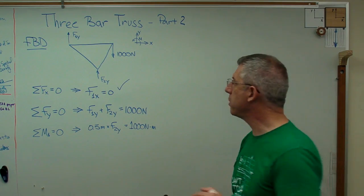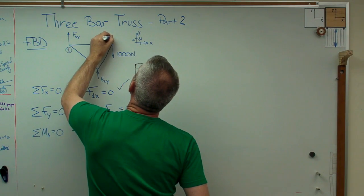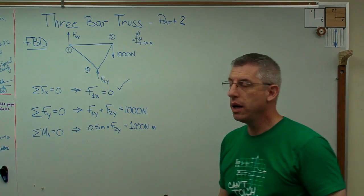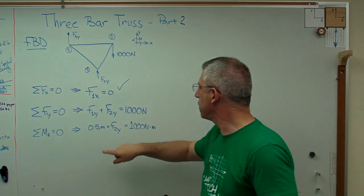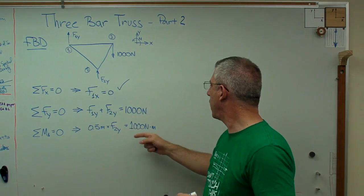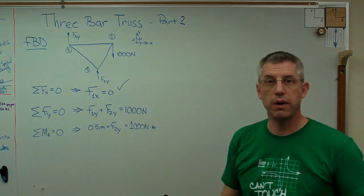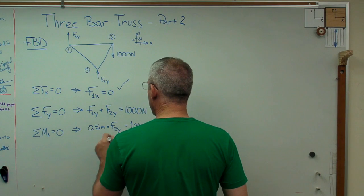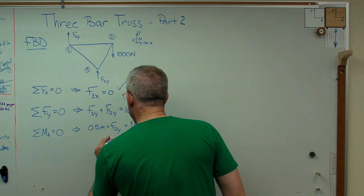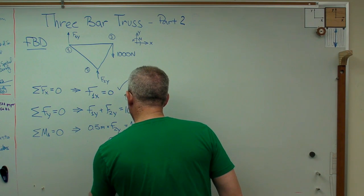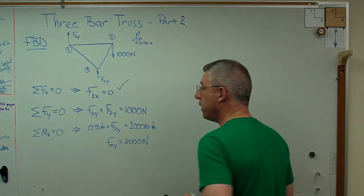Now, it would be nice if I knew what one of those was. So what we did was we took the sum of the moments about some point, and I used point 1. That's point 1, that's point 2, and that's point 3. So we'll do that, and when we do that, we get this equation which is one half meter, that distance right there, times f2y equals a thousand newton meters because there's one meter there and one thousand newtons.